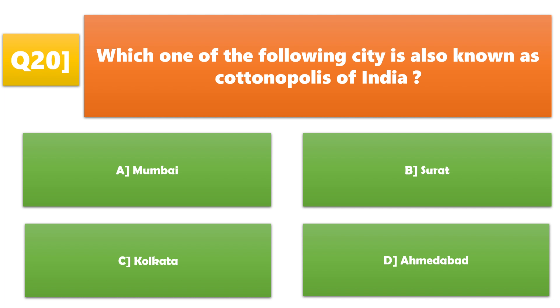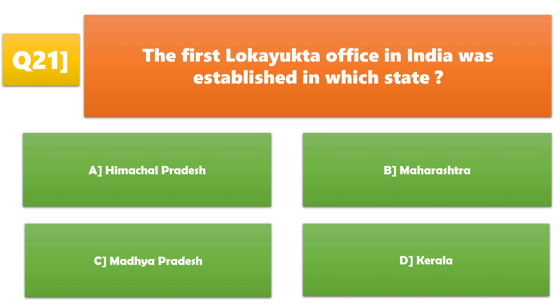Which one of the following cities is known as the Commercial Capital of India? A. Mumbai, B. Surat, C. Kolkata, D. Ahmedabad. A. Mumbai is the correct answer.